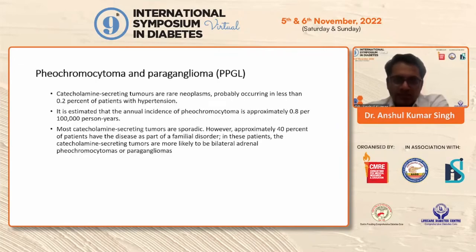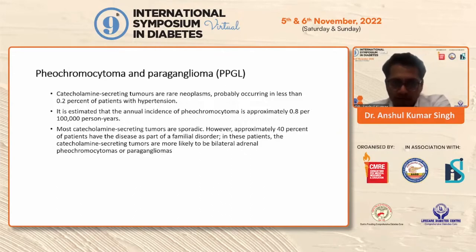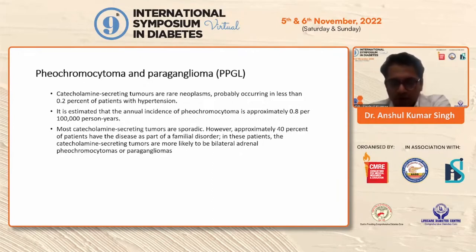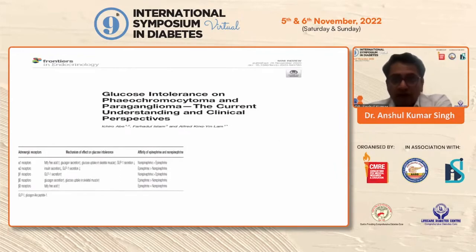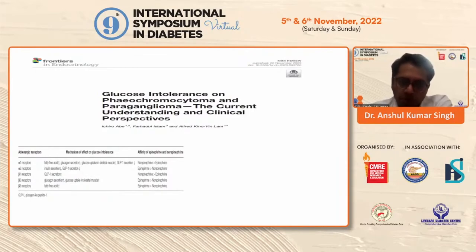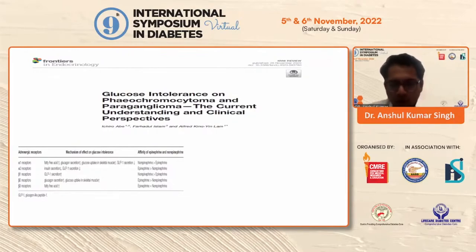Pheochromocytoma is a catecholamine-secreting tumor and a rare neoplasm. It is estimated that the annual incidence is very low. However, patients presenting with classical symptoms of paroxysmal episodes of hypertension must be evaluated for a possible pheochromocytoma. The physiology of hyperglycemia: alpha-1 receptors lead to decreased GLP-1 secretion, increased glucagon secretion, increased free fatty acids, and decreased insulin — all cumulatively leading to hyperglycemia.